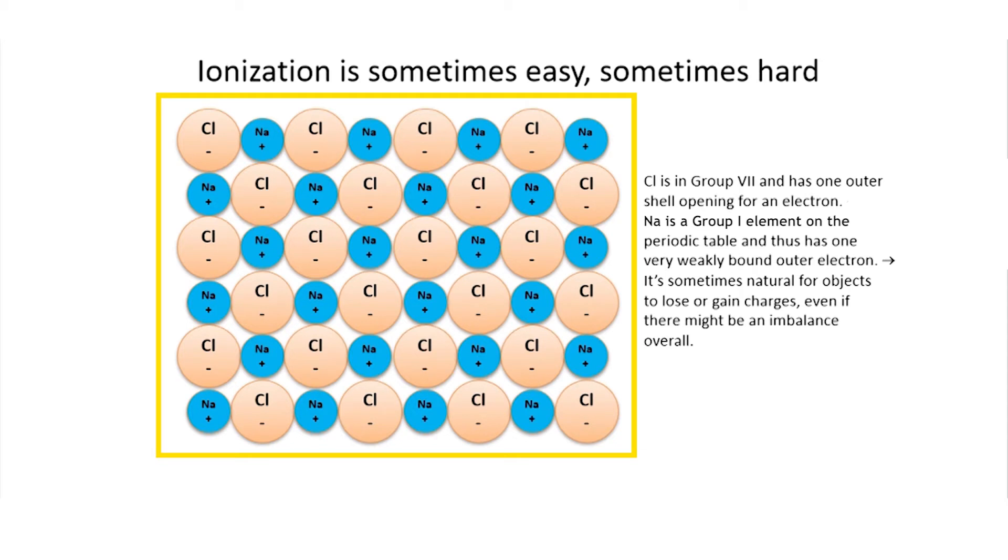Of course, anytime you have electrons, you can theoretically still get them to move if you have a strong enough force to push them around. Ionization refers to the process of separating an electron from its host atom. And this process is really difficult in solid sodium chloride, but it can be made easy.